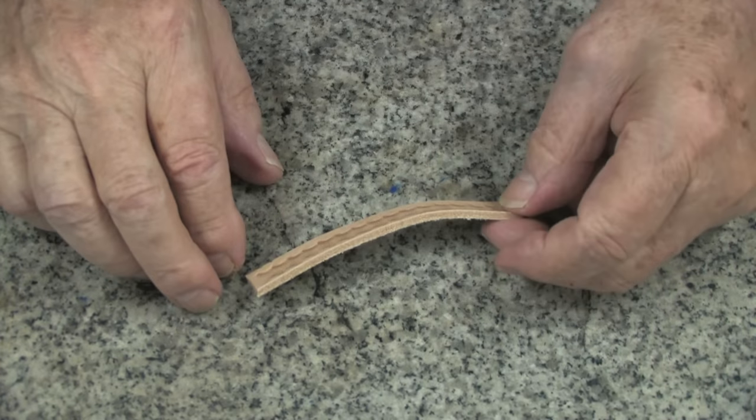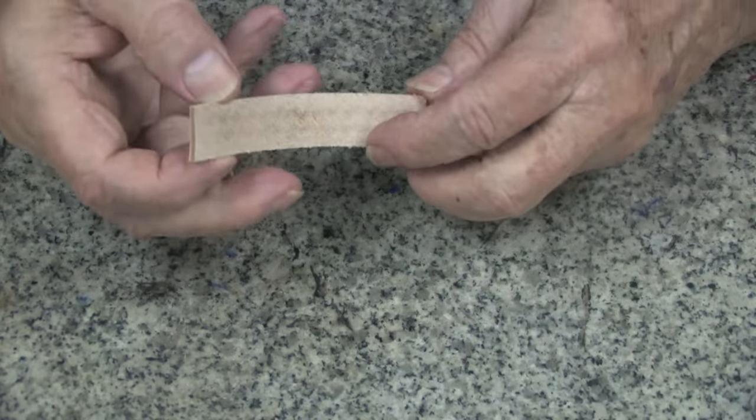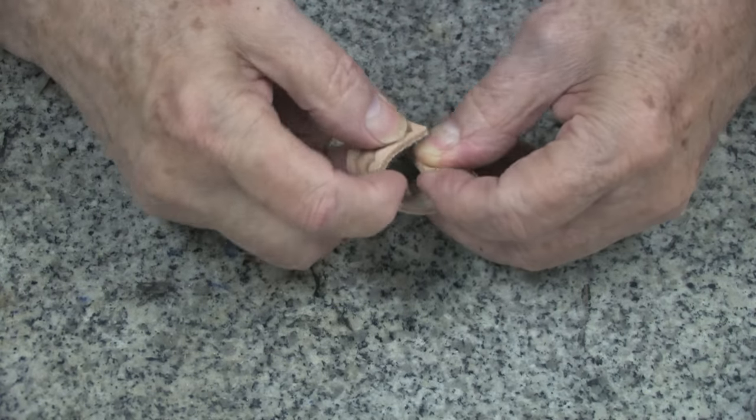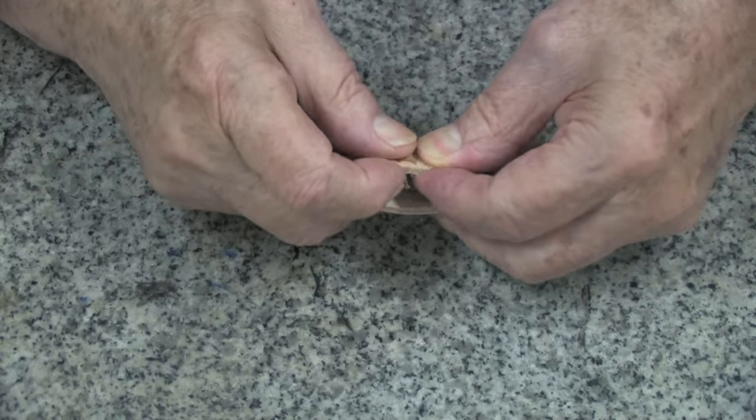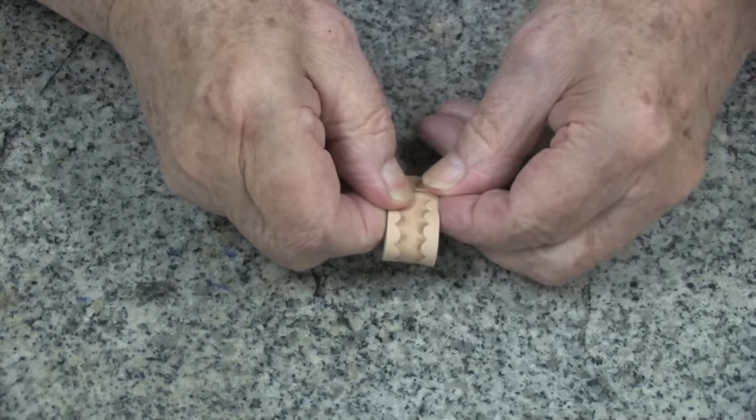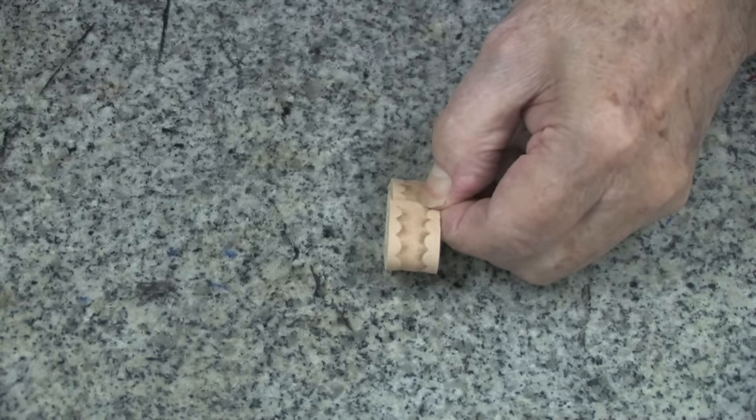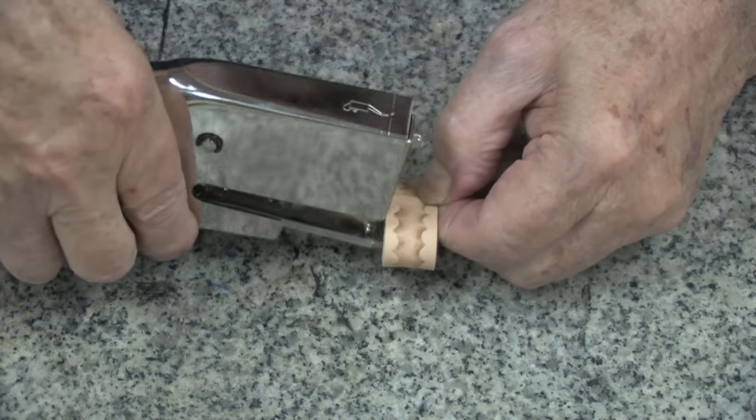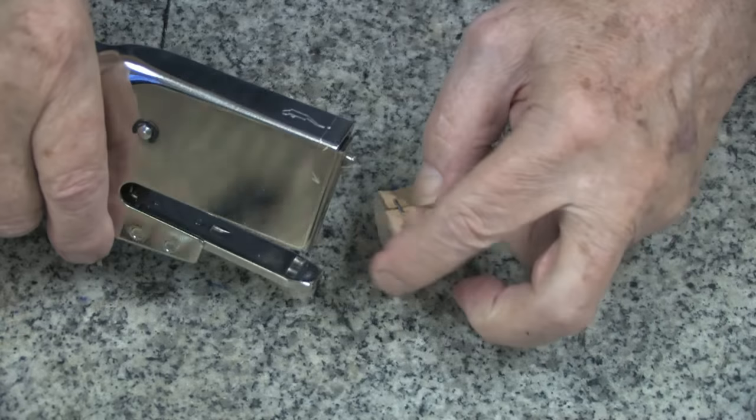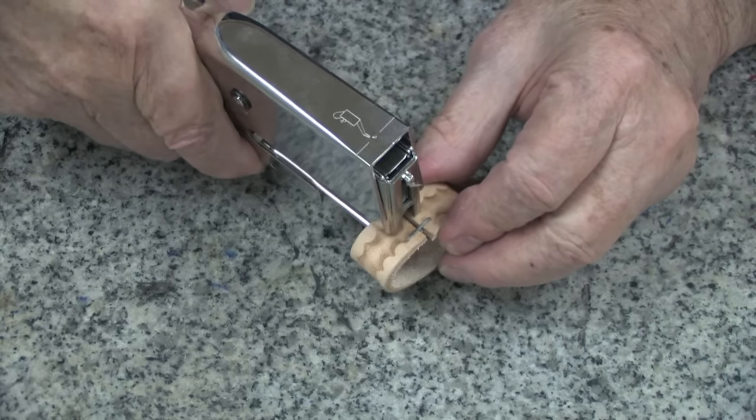There are several ways we can fasten these to make them into a loop. One is to fold it, hold it between your fingers, and with a heavy duty stapler, I prefer to put two staples.